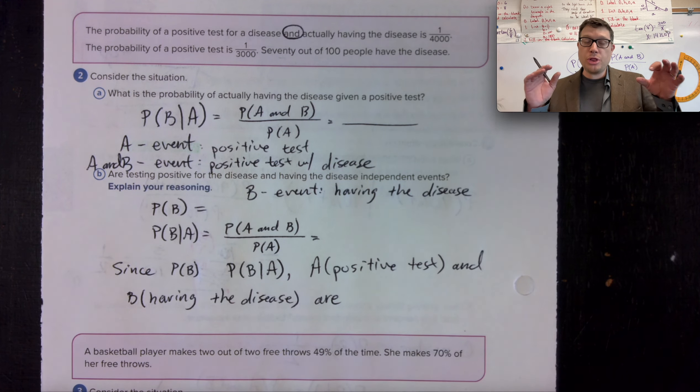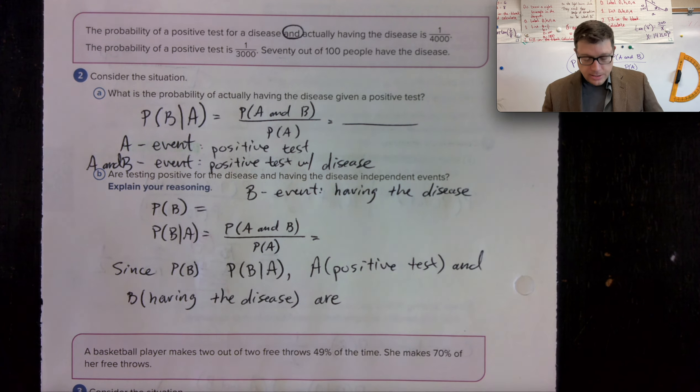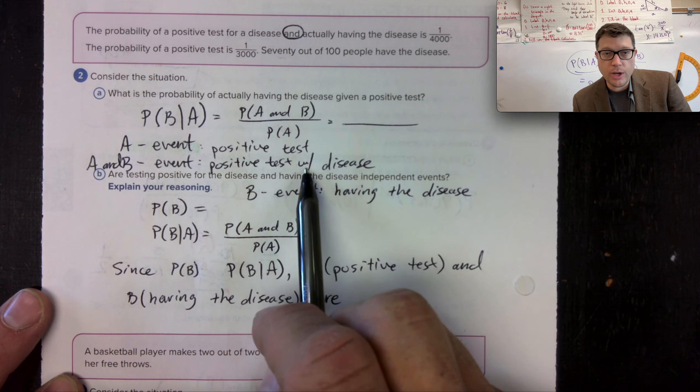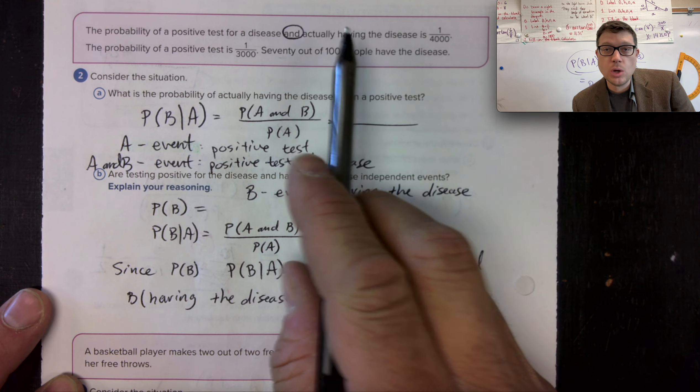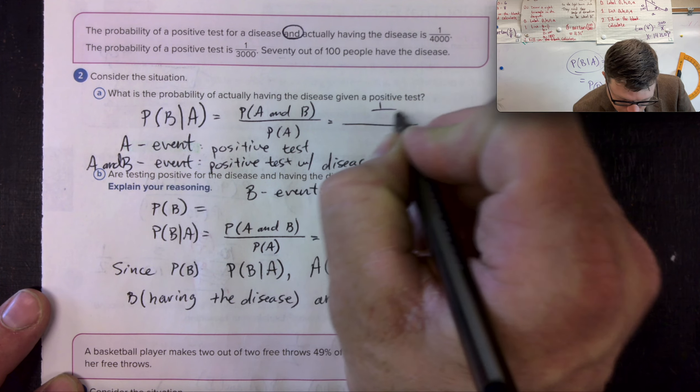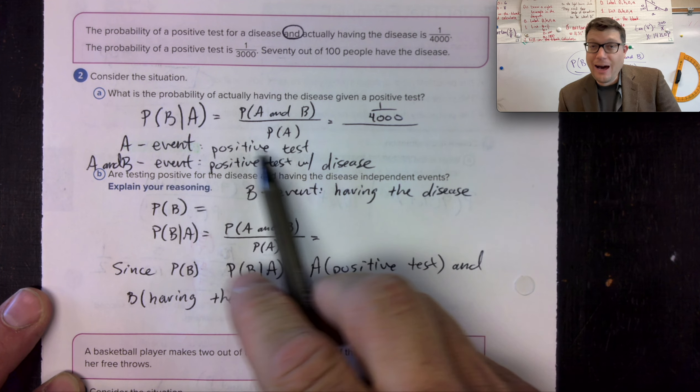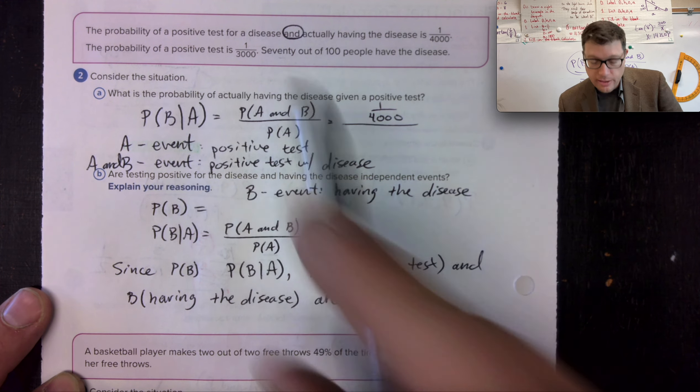So if we use those identifiers, then it's possible to say that the probability of having a positive test with the disease is one out of 4,000. Well, the probability of having a positive test is one out of 3,000.